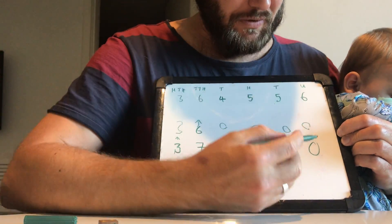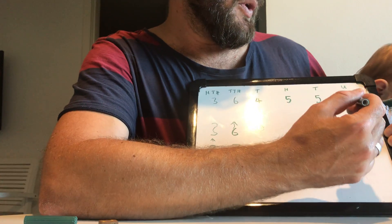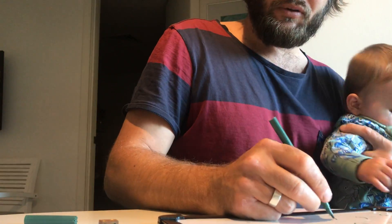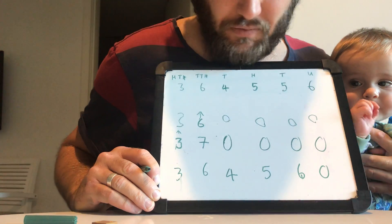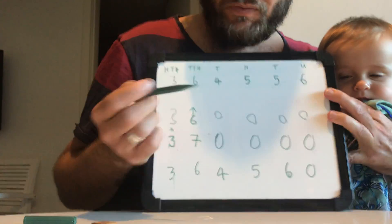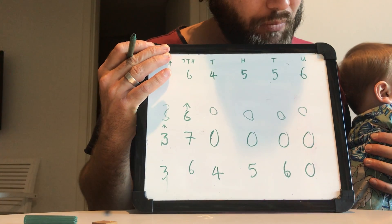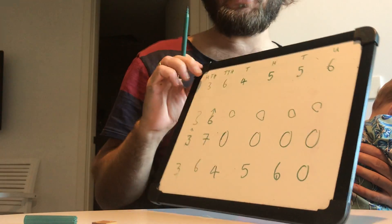Let's do one more. I rolled a two, so I'm looking at the second digit from the units — that's the tens place, which is a five. I look right next door to the right and it's a six. Six is five or more, so I add one more to the five tens. My new number is three hundred and sixty-four thousand, five hundred and sixty.